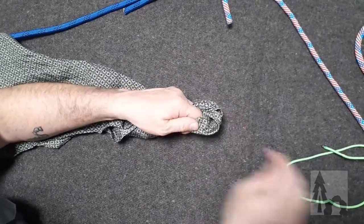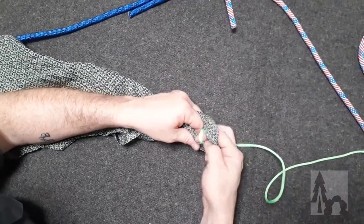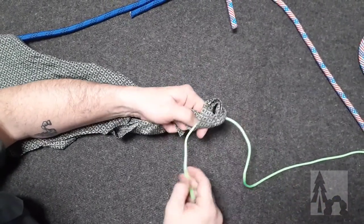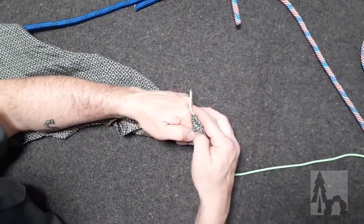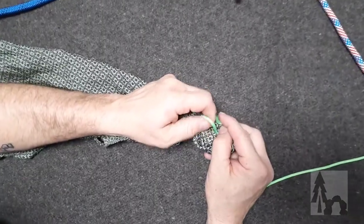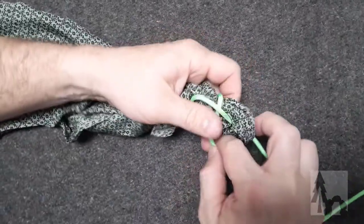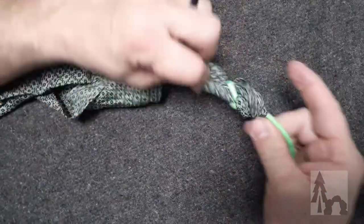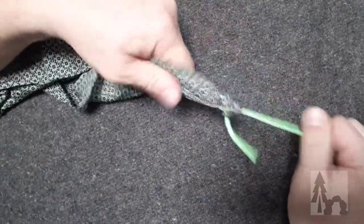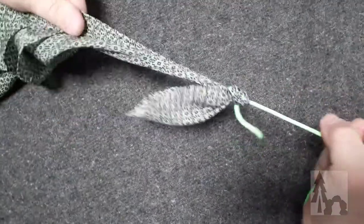From that bight, I will feed the line up through that corner, come around and behind, and then tuck the line under itself. Then pull back through, and you end up with the line catching on itself.